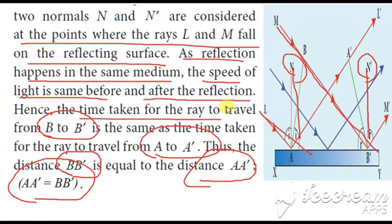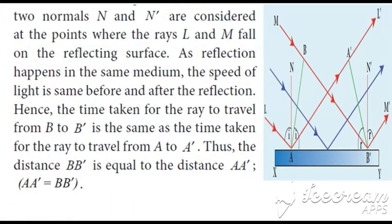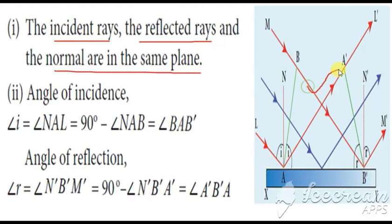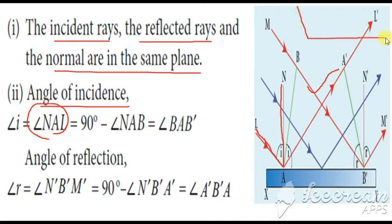Since the time taken is the same and it is in the same medium, we can say AA' is equal to BB'. According to the laws of reflection, the incident ray, reflected ray, and the normal are all in the same plane. The angle of incidence is given by angle NAL, which can be written as 90 degrees minus angle NAB.